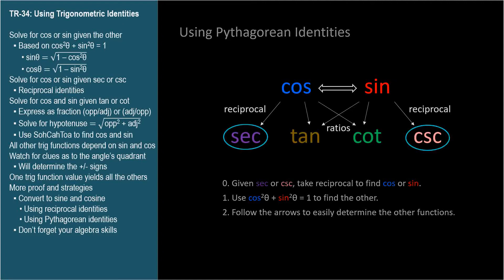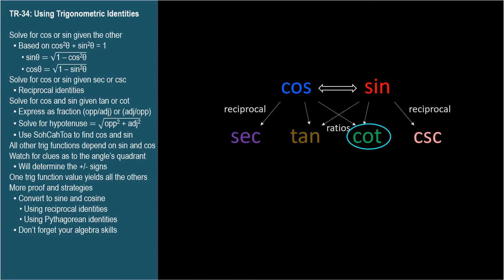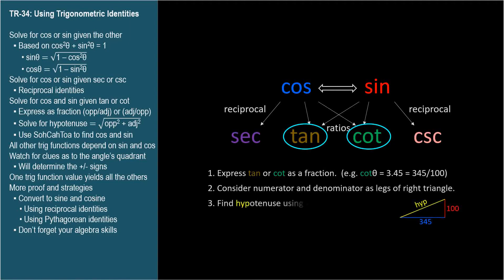If given tangent or cotangent, express it as a fraction. Consider the numerator and denominator of this fraction as sides of a right triangle and use the Pythagorean theorem to find the hypotenuse. Then use SOHCAHTOA to find the cosine and sine and follow the arrows.